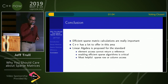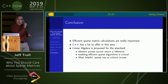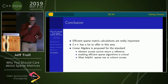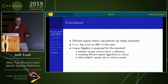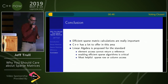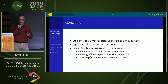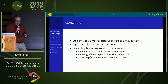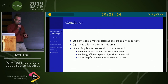There is a linear algebra proposal for the standard, and I wanted to record a couple of requests. First, that returning a reference from element access should not be mandatory. And second, that we enable efficient sparse algorithms by supplying column and row accessors that provide a sparse view — not a dense view — of a column or row, so you can iterate over the nonzero values. I hope I've piqued your interest in sparse matrices and sparse matrix algorithms. I think it's very interesting.